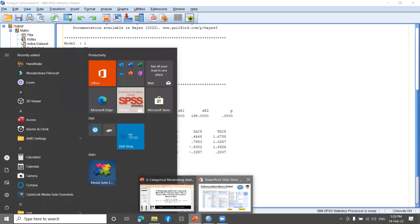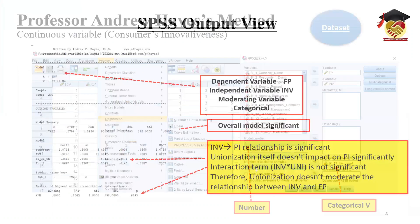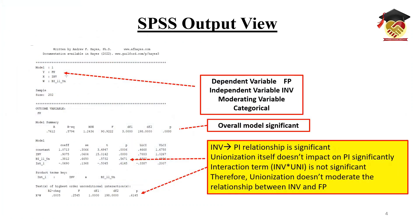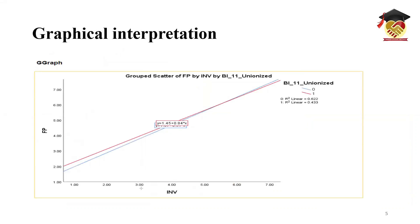That's all about the explanation and analysis. Now let's go to our presentation. I've given you everything clearly so you can check it. This is for the descriptive analysis, this is for the overall model significance, and this is to show you that both the moderating variable and interaction term are not significant. Now we have to show the graphical interpretation for the moderating variable — whether it is categorical or continuous, you must show the graphical interpretation as it adds value to your analysis and report.